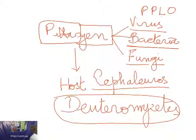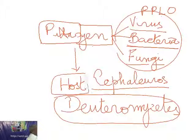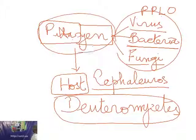So a pathogen is one which causes a disease — it could be a virus, a bacterium, or a fungus. Coming to the host: anybody could be a host. Plants are the host when these pathogens attack plants; they also attack animals and human beings. In today's botany class, we are going to talk only about the relationship of viruses, bacteria, and fungi to plants — what pathogenic relationship they have.